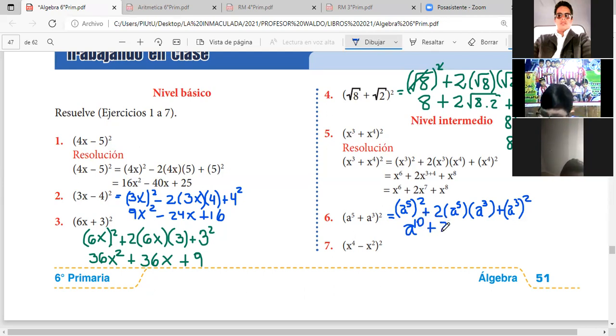Más 2, y acá A a la quinta por A al cubo. Y esto lo hemos visto en teoría de exponentes: producto de bases iguales, sumamos los exponentes. Entonces, como la base es igual, sigue siendo A, sumamos 5 más 3, 8. Más A, 3 por 2, 6. Y listo, se acabó el problema 6.